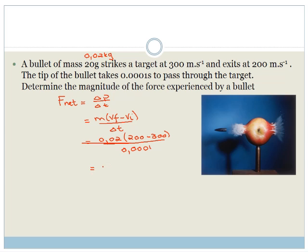Okay, so that is 0.02 times by minus 100 over 0.0001. So we can pop it in our calculator and times this by 100. And then we divide by 0.001. And we end up with 20,000. It's minus 20,000. And what is force measured in? Newton.